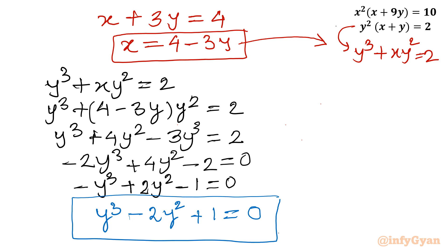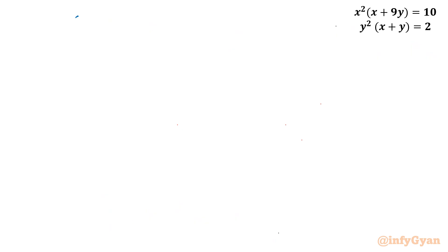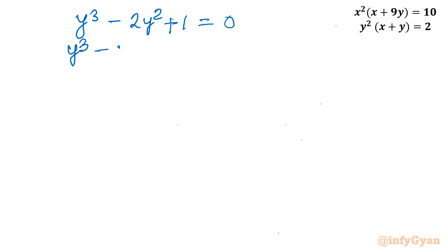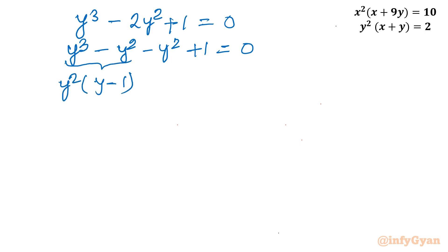This is a cubic equation. I will use factorization to solve y³ − 2y² + 1 = 0. We can rewrite it as y³ − y² − y² + 1 = 0. From the first two terms, y² is common, giving y²(y − 1). From the last two terms, taking −1 common gives −1(y² − 1).